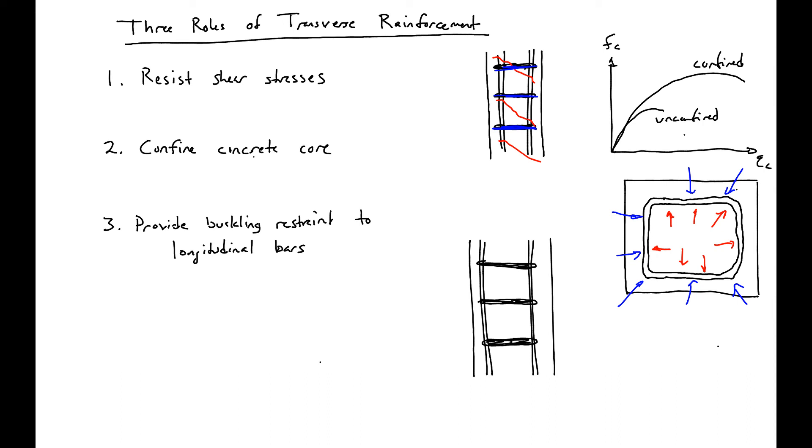So our bars are going to want to buckle, and they're going to want to buckle in between two ties or across multiple ties. And what our reinforcement will do is provide buckling restraint, essentially forcing a higher mode of buckling.